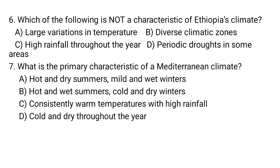Question number seven: What is the primary characteristic of Mediterranean climate? A. Hot and dry summers, mild and wet winters. B. Hot and wet summers, cold and dry winters. C. Consistently warm temperatures with high rainfall. D. Cold and dry throughout the year. Ten seconds given.